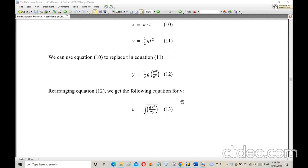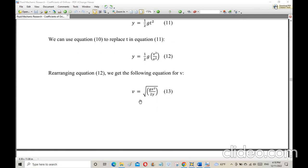We can rearrange the last equation to get an equation for the actual speed, which is square root of g times x squared over 2y.